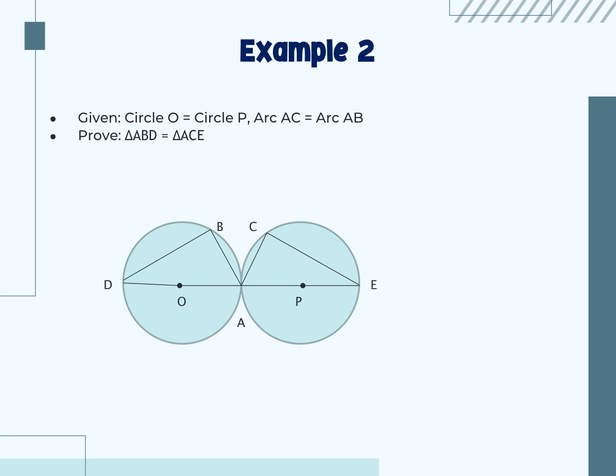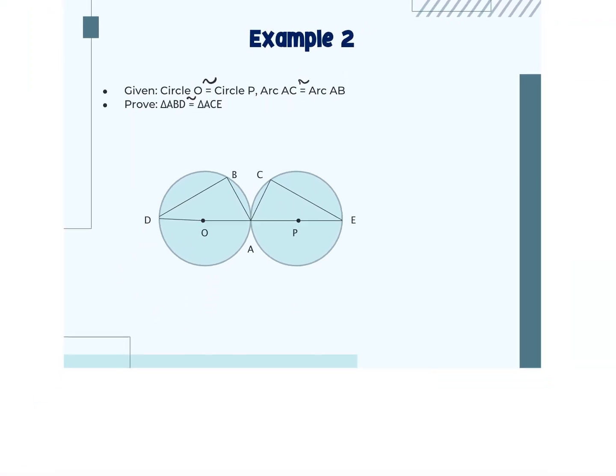They're asking us to write a proof. We're given that circle O is congruent to circle P and arc AC is congruent to arc AB. We need to prove the two triangles inside these circles are congruent, reaching back to our five shortcuts: SSS, SAS, hypotenuse-leg, ASA, or AAS.